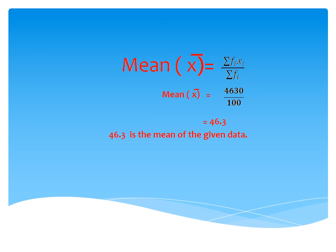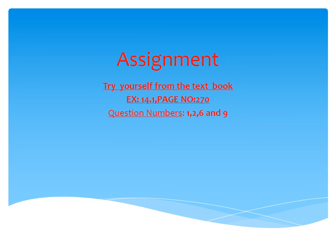We substitute the values into the formula: mean = sigma fi xi divided by sigma fi. Therefore, mean = 4630 divided by 100, which gives 46.3. So 46.3 is the mean of the given data. This is the way of finding mean by the direct method. You can now try the textbook problems given in the assignment using this direct method formula.